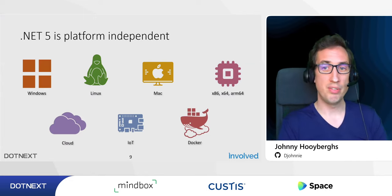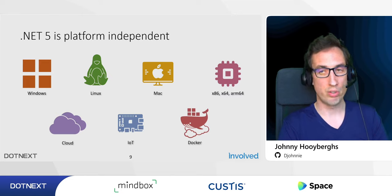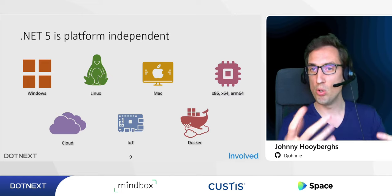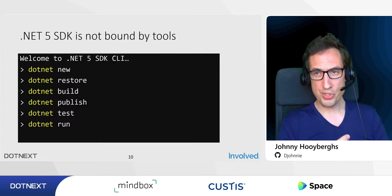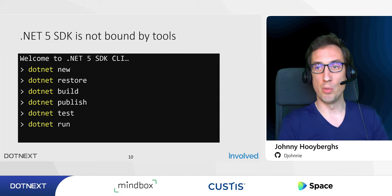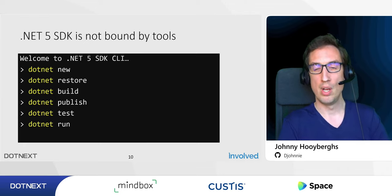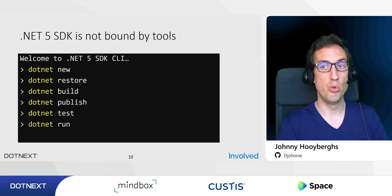.NET 5 can run on Windows, Linux, Mac, different processor architectures like ARM, x86, or x64, in the cloud, on IoT devices like a Raspberry Pi, and in Docker containers. The SDK is not bound to Visual Studio — it comes with a CLI so you can create, test, build, publish, and run projects entirely from the command line. This means you can develop applications inside a Docker container if you want, and it's very powerful for continuous integration scenarios.